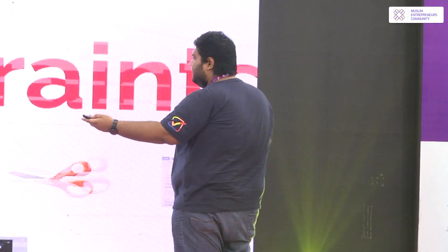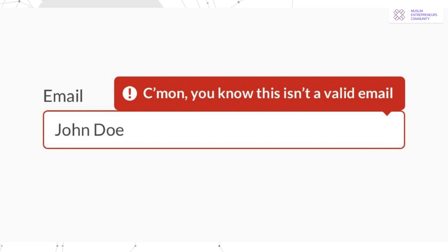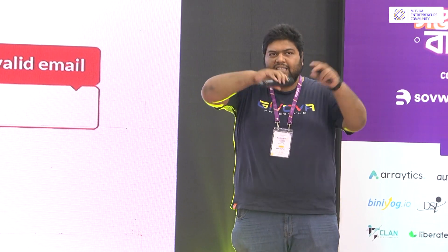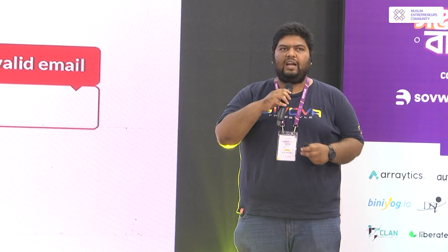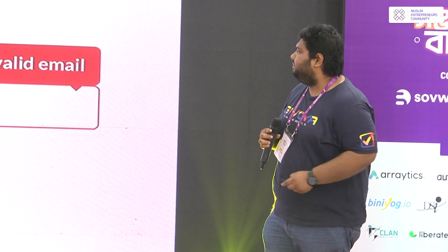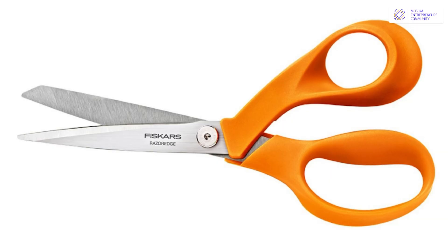What are the constraints? We have to do the verification of the email — the live verification. If we do not have a valid email, we will be able to do it. So we have to keep the constraints and we don't have time to get lost.